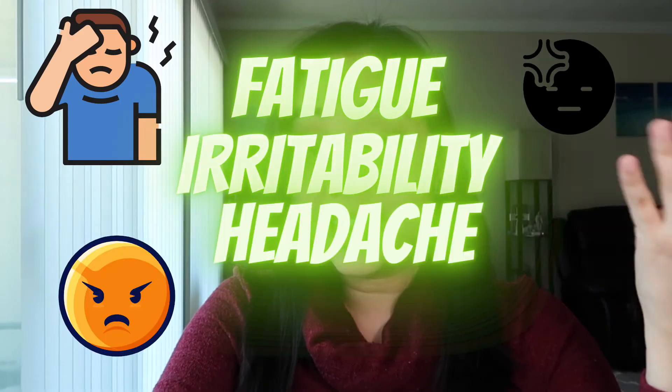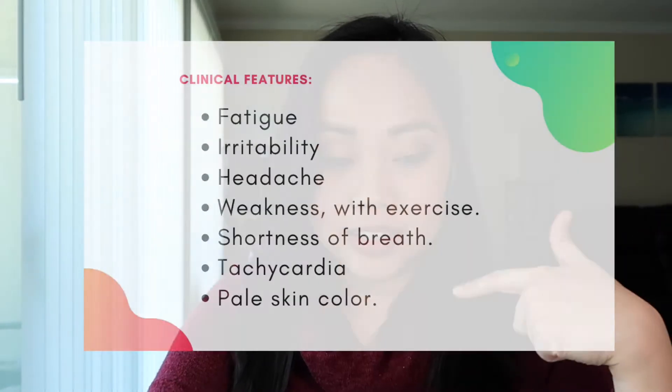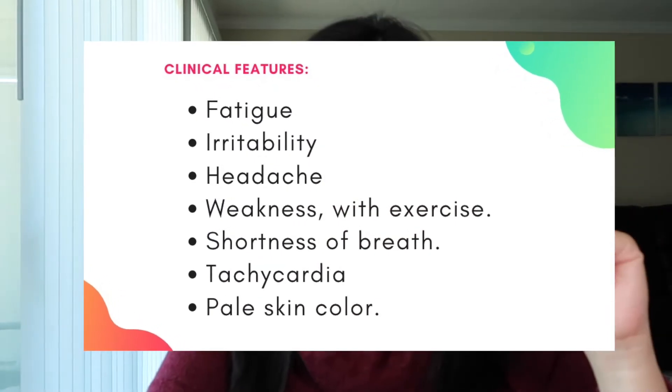Let's start with the clinical features of IDA. It can show up over a period of months to years — it builds up, the severity grows over time. Symptoms include fatigue, irritability, headache, weakness especially with exercise, shortness of breath, tachycardia, and pale skin color because you don't have enough hemoglobin — your RBCs are hypochromic. You just don't have enough oxygen in your body because you don't have enough hemoglobin because you don't have enough iron.